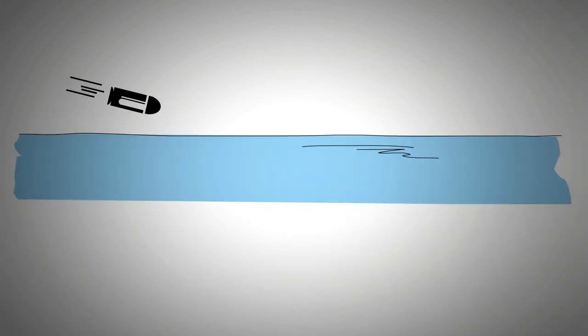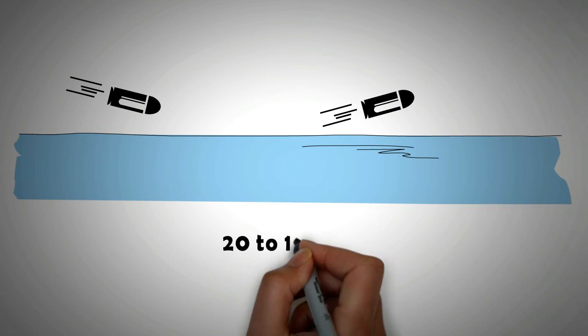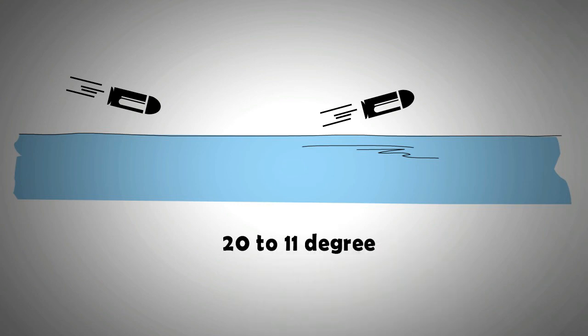Interestingly, bullets have a high tendency of ricochet if they hit the surface of water at a shallow angle, despite water not being a hard surface. This phenomena is similar to skimming stones. The ideal angle for skimming stones is achieved if they are thrown between 20 degrees and 11 degrees from the horizontal.